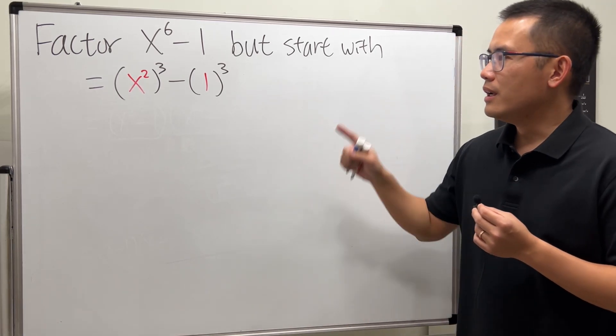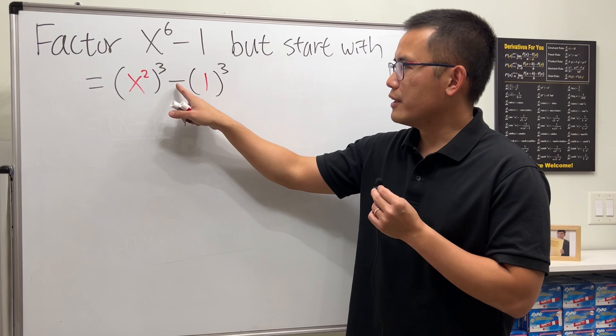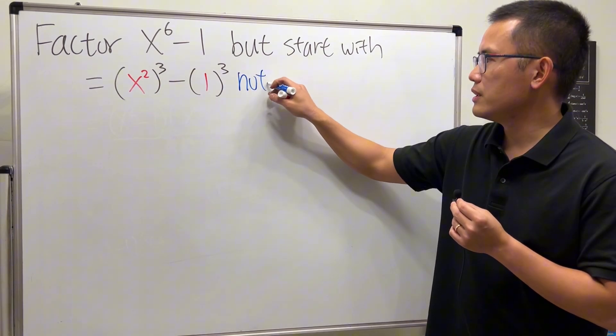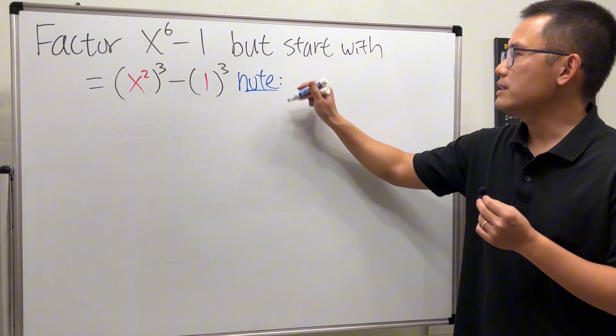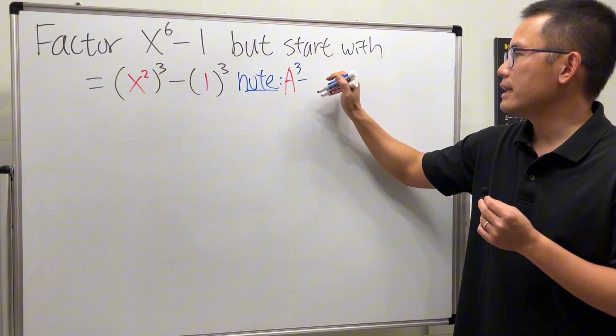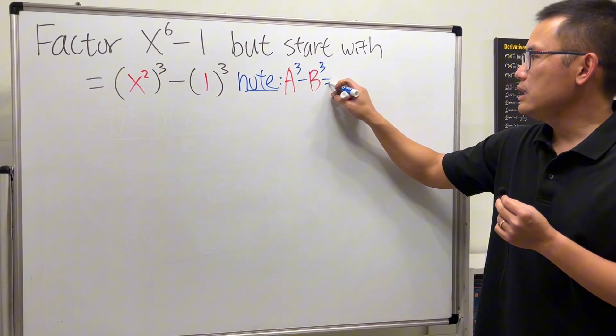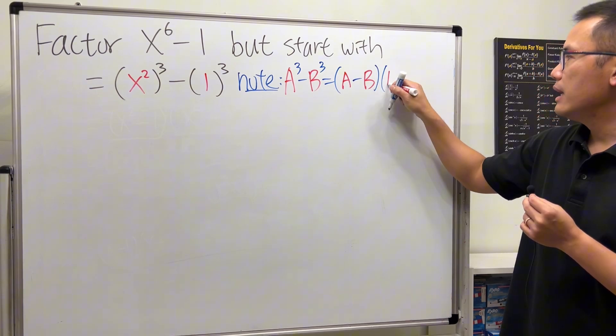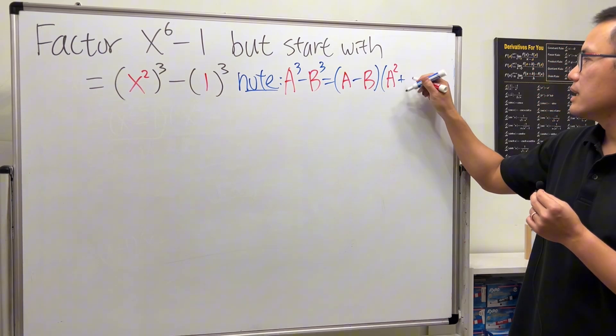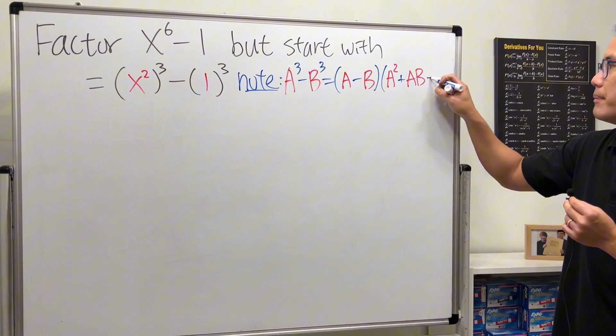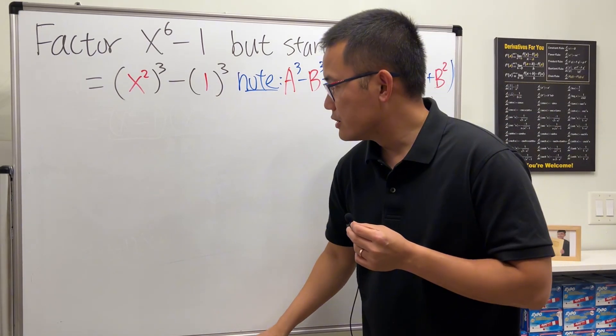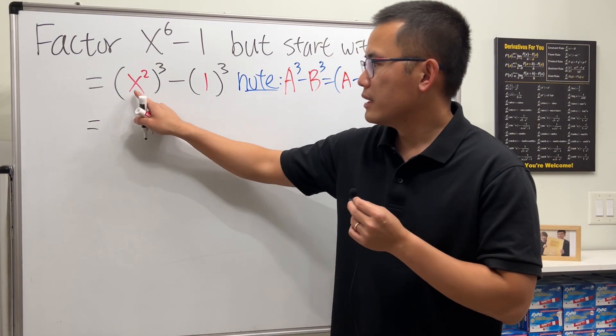First off, start by factoring a difference of two cubes. And once again let me remind you guys of the formula, which is when we have a³ minus b³, this equals (a - b) times (a² + ab + b²).